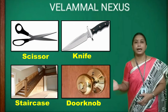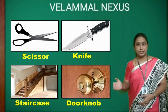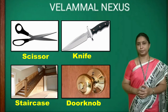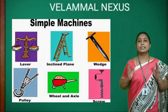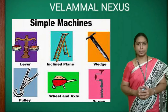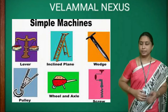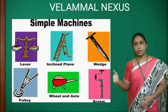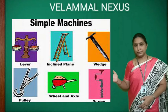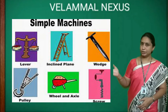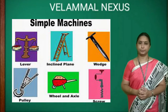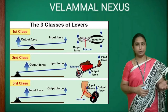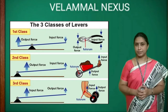We use many kinds of simple machines in our daily life — examples include scissors, knife, staircase, doorknob, and many more. There are six types of simple machines: lever, wheel and axle, pulley, inclined plane, wedge, and screw. In our last class we learnt about the lever and its types.